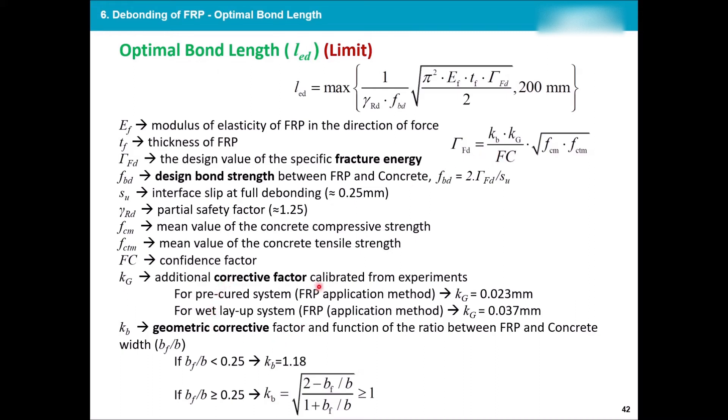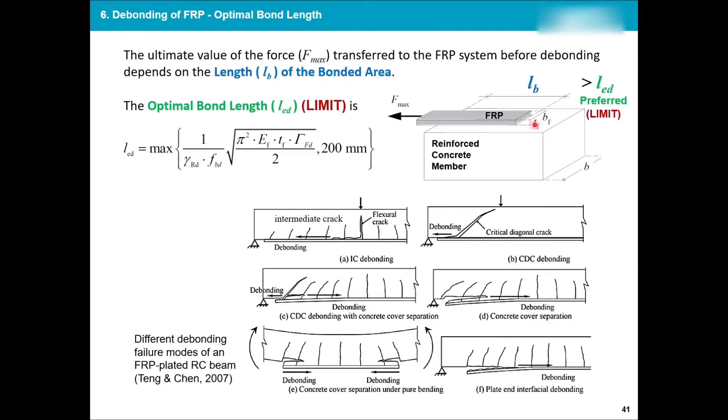And just in this formulation, remember the K_g and K_b. So K_g is a corrective factor which comes from the experiment, and it really depends on how the FRP is applied. I told you at the end of this course we will see what are the different methods that you can apply FRP. One of the methods is pre-cured or wet layup. Depending on this, how you're applying the FRP, your K_g will be different. Then there is K_b, which is the geometric correction factor. And it's between a ratio between FRP and the concrete width. So what is happening here between the width of your concrete and the width of your FRP. And then you have the thickness of the FRP, which is just few millimeters.